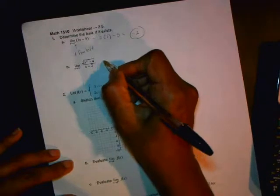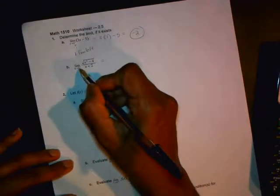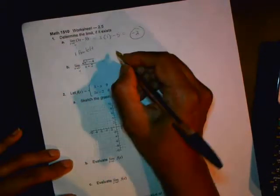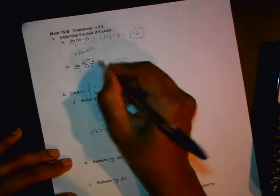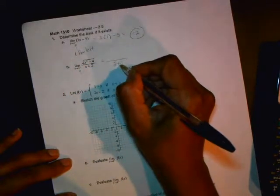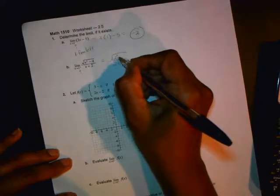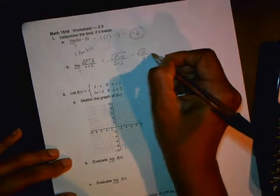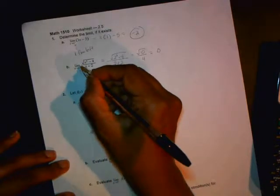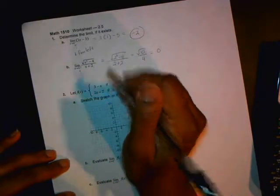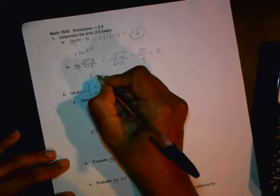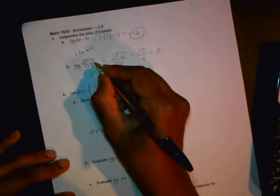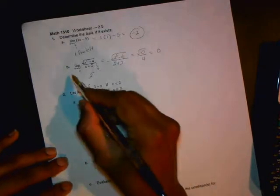For the next one, x is approaching two from the positive side, the right side. Again, there's no issues. You can just plug in two on the bottom, plug in two on the top, and you get square root of zero over four, which is just zero. Here in this problem, because of the square root, it was important that we approach two from the right. If you approach two from the left, then this would be an imaginary number. So here this notation actually made sense.